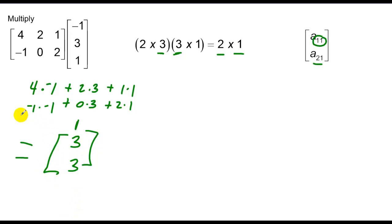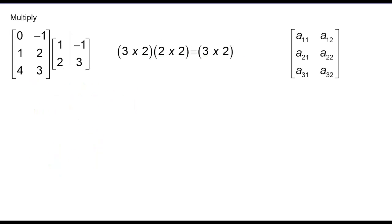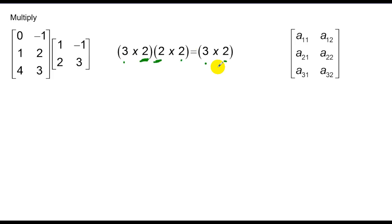Let's do a few more of these. In this case I have a 3 by 2 multiplied by a 2 by 2. Notice columns of the first equal rows of the second. The solution is the outside dimensions, so 3 by 2 — three rows, two columns.